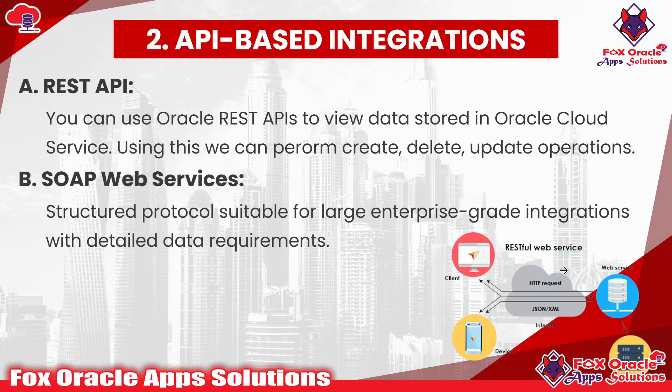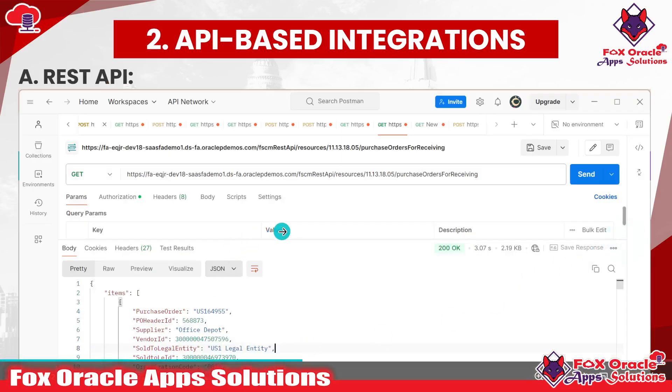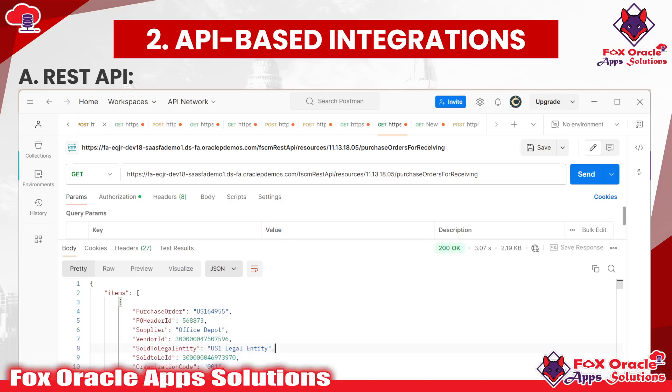Now, next we have API-based integrations. With the help of APIs, we can also extract data from Oracle Fusion SaaS applications. In terms of APIs and web services, we have REST services and SOAP web services. Using REST and SOAP, we can also get data from SaaS applications, and we can also insert data or create transactions in Fusion applications. REST and SOAP web services give us flexibility to get data from SaaS applications, and when we want to get data we have to use the GET method of the REST API.